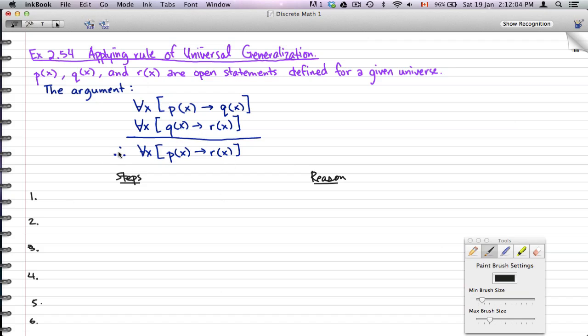because all we need at the end result, all we need for step six is we need to end up with this. We can use whatever we want within this argument to get to that. So we're just going to start off with the first one, with ∀x [p(x) → q(x)]. And the reason for this is it's a premise.